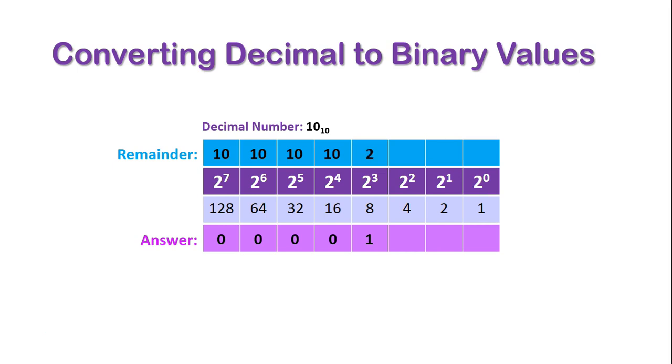So now we go, does 4 go into 2? No, it doesn't. Remainder is still 2. Does 2 go into 2? Yes, it does, and we have no remainder. And obviously, 1 can't go into 0, so our answer in this case is 1, 0, 1, 0 in binary.